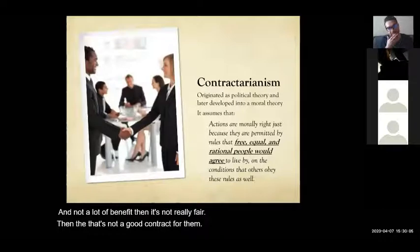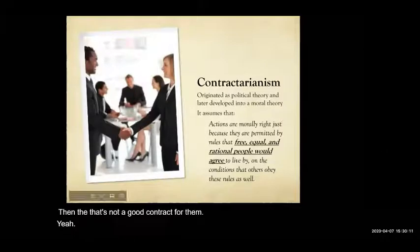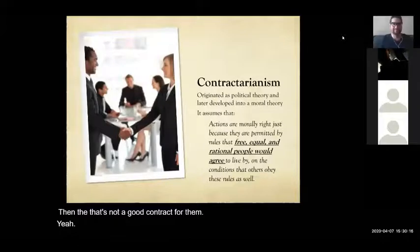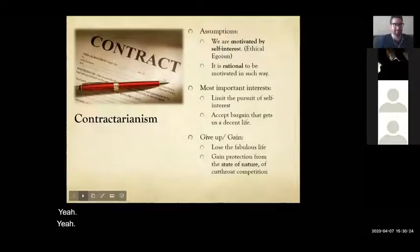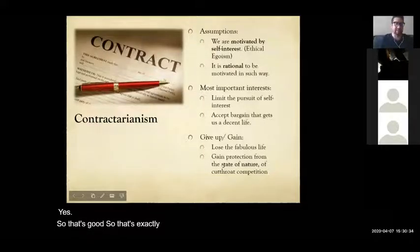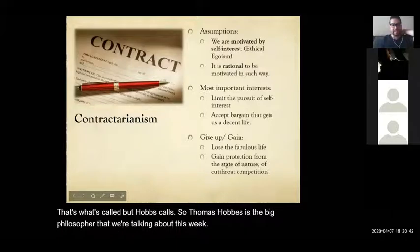In government class we talk about if the government collapses, there will be anarchy, and then all the moral codes of society will collapse too. Yes — that's exactly what I'm going to talk about right now. That's what Hobbes calls the state of nature. Thomas Hobbes is the big philosopher we're talking about this week, and he calls that the state of nature.